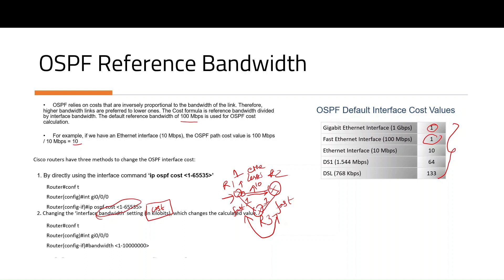The third method is to change the reference bandwidth. The default on Cisco routers is 100 Mbps. You can change it to 1000 Mbps, which will lower the cost values accordingly. These are the three methods to change the traffic direction.